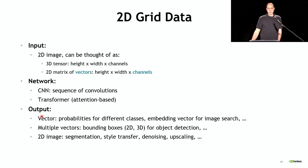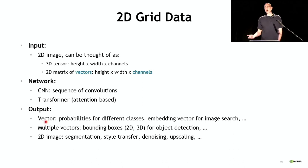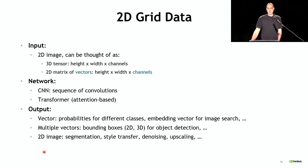Networks used in practice include convolutional neural networks — CNNs — which are some sequence of convolutional layers, normalizations, and point-wise operations. Transformers and attention-based networks are being experimented on for image data. Outputs vary widely: a vector of probabilities for image classification, multiple vectors such as bounding box coordinates for object detection (2D or 3D), or other 2D images for tasks like style transfer, instance segmentation, image denoising, or upscaling.